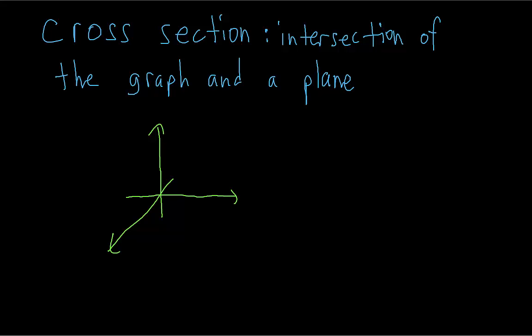Because we are better at visualizing what two-dimensional graphs are going to look like, if we hold one variable constant and look at the slice just at that value of the variable, then it reduces to a two-dimensional equation, which we can visualize easier than an equation with three variables.